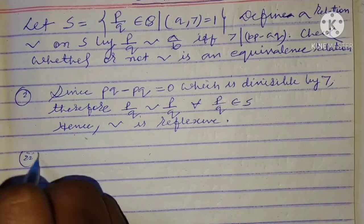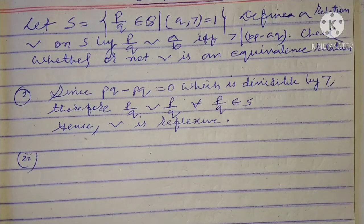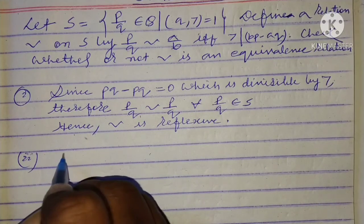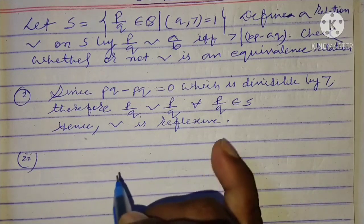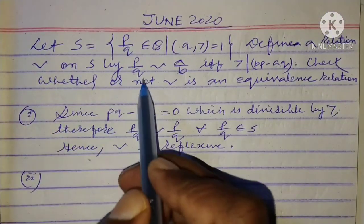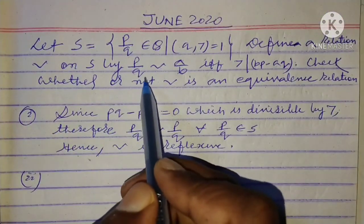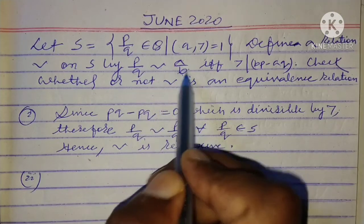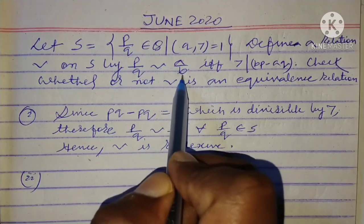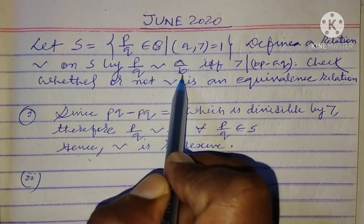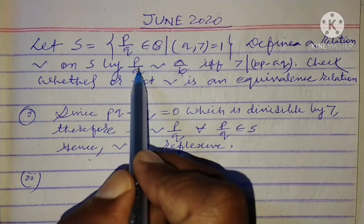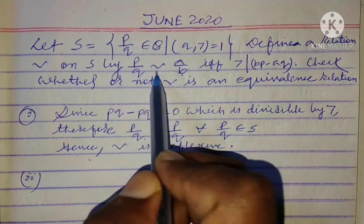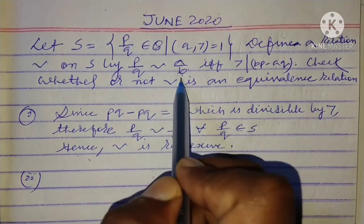Now we check symmetry — is the relation symmetric or not? For symmetry we need to show that if p/q is related to a/b, then a/b is related to p/q. We need to show: if p/q is equivalent to a/b, then a/b is equivalent to p/q.